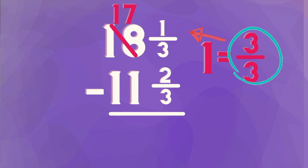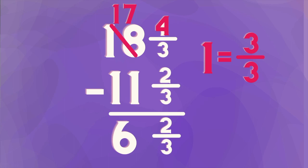And then we can put those three-thirds with the one-third we already had. Three-thirds plus that one-third is going to give us four-thirds. Now that we're done trading, we can subtract. I now have enough thirds to subtract. Four-thirds minus two-thirds is two-thirds. And 17 minus 11 is six.